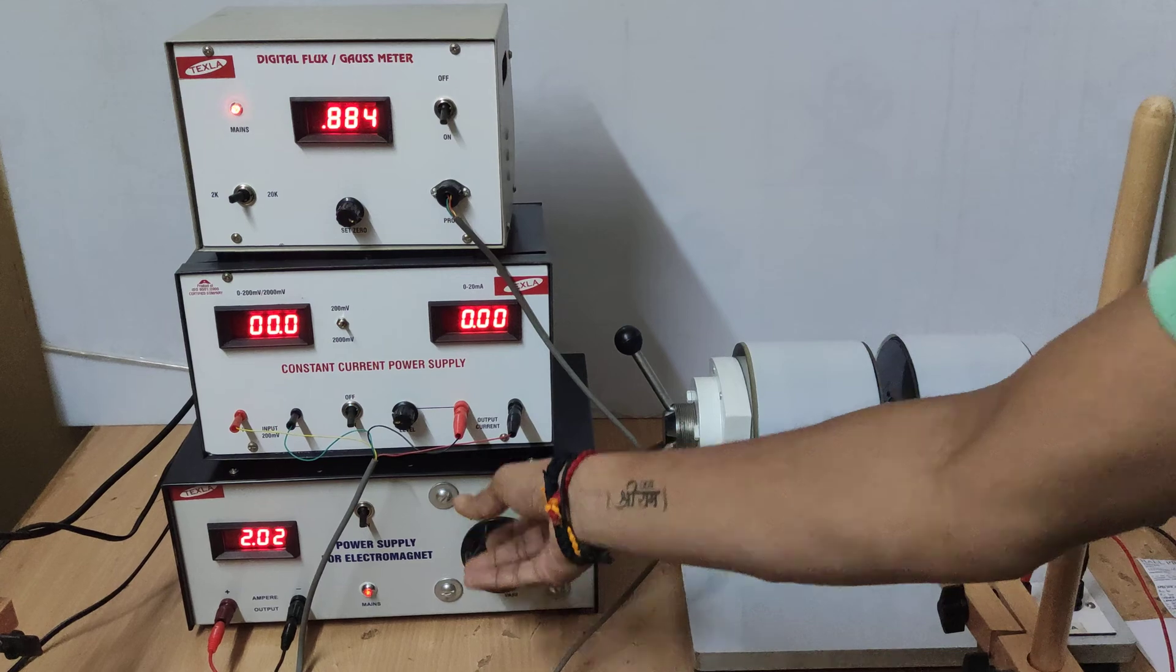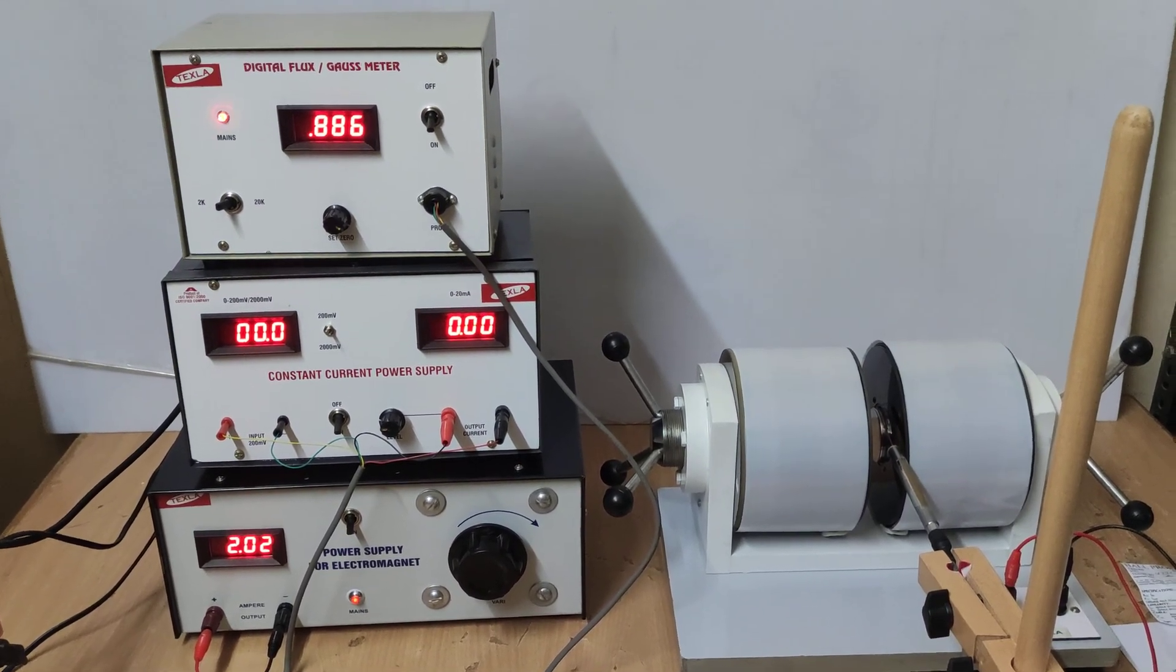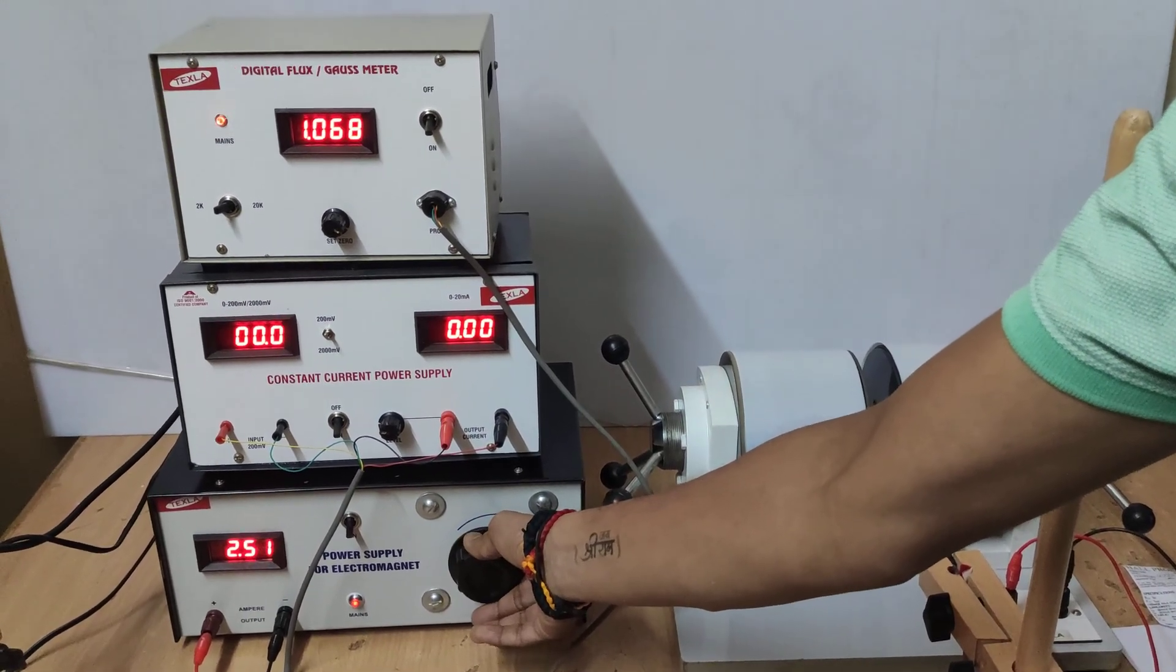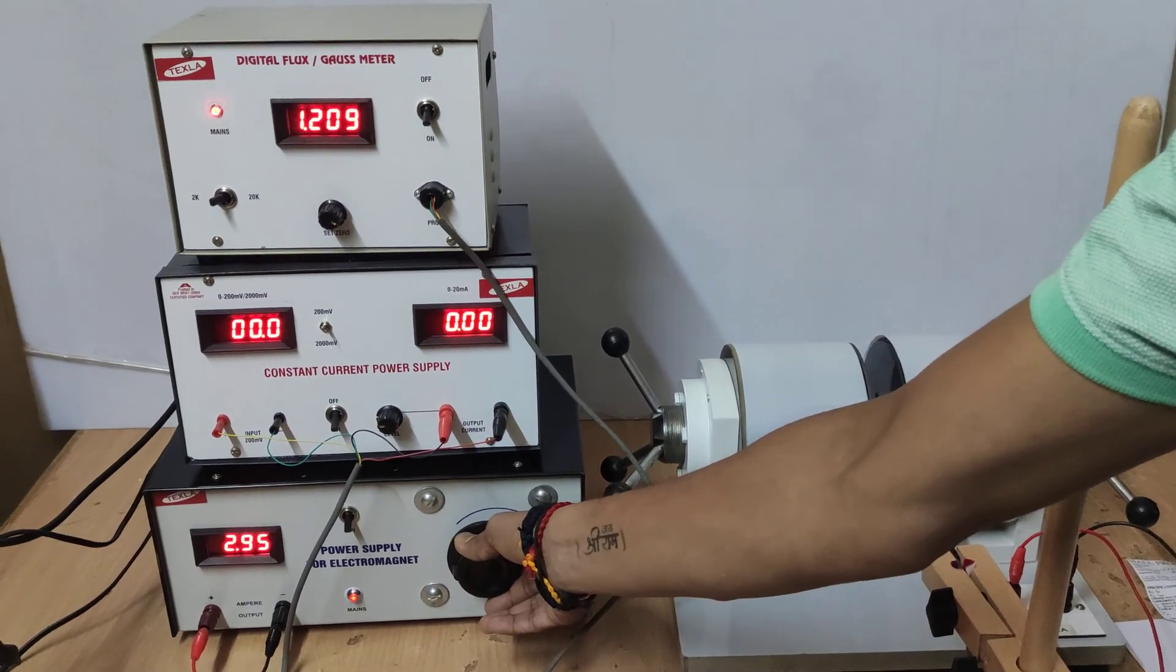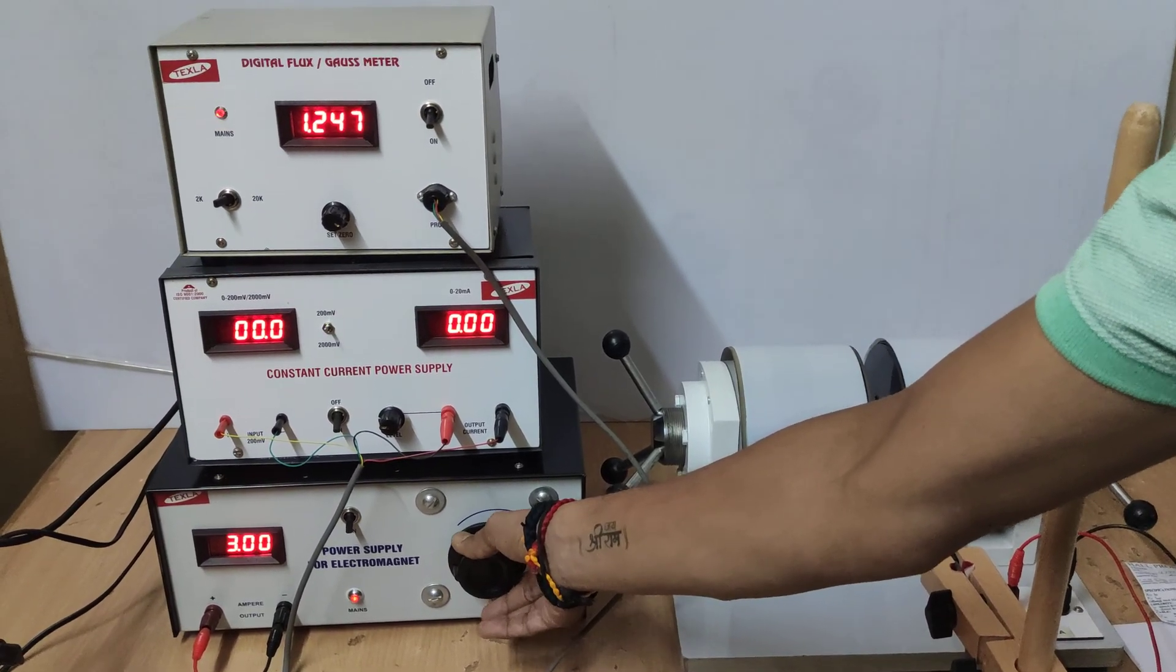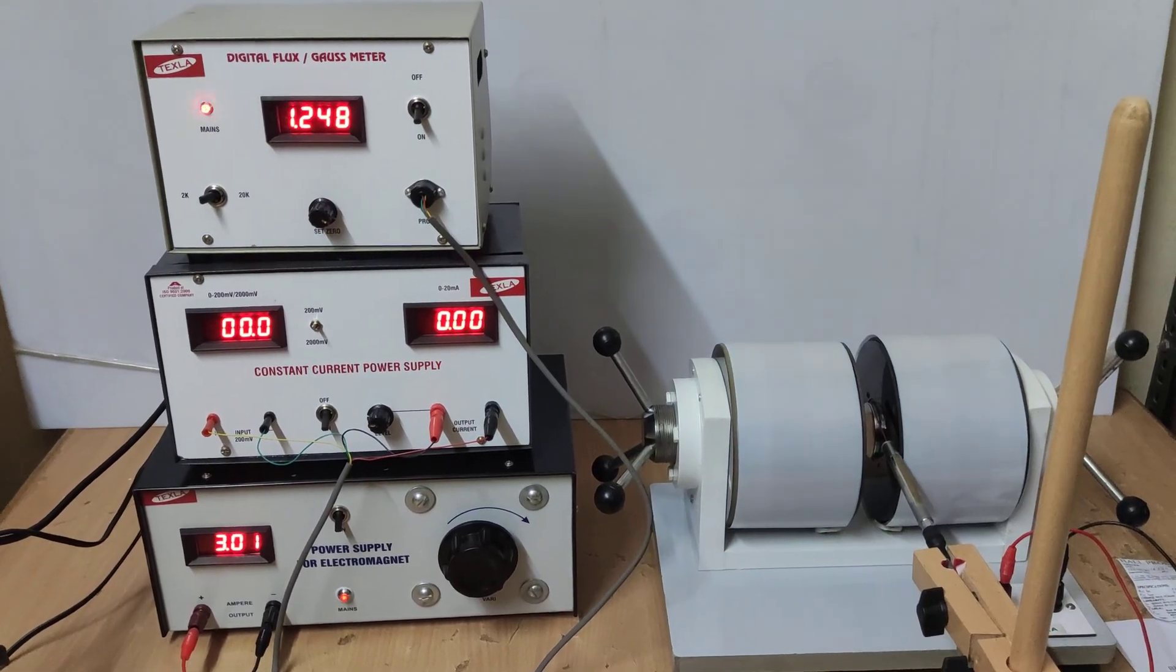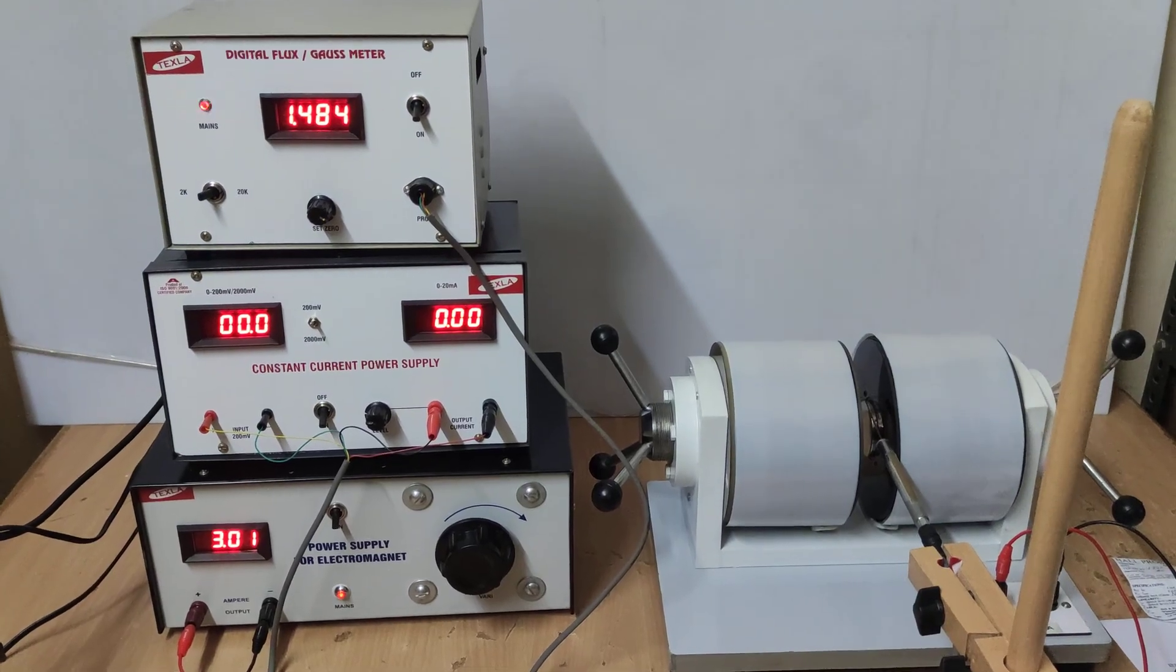For 2 ampere, 0.886 kilo gauss. Similarly for 3 ampere you have to maintain very slow variation. For 3 ampere it is 1.248 kilo gauss. I have to make a table of form in this format.